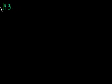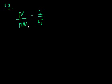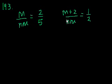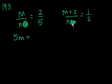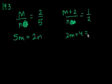Problem 193. In a certain calculus class, the ratio of math majors to non-math majors is 2 to 5. If two more math majors were to enter, the ratio would be 1 to 2. How many students are in the class? Cross-multiplying the first equation gives 5m = 2n. From the second: 2(m + 2) = n, so n = 2m + 4.